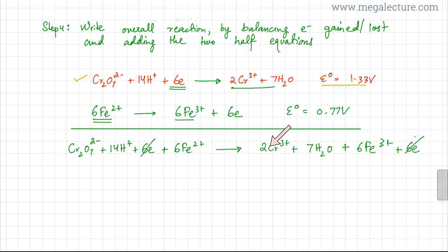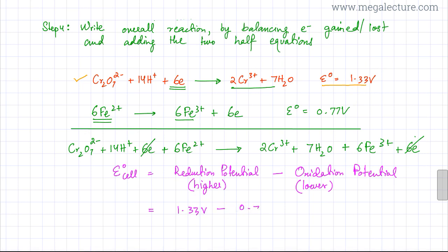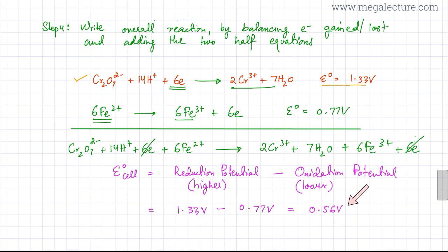Finally, I need to calculate the E0 cell for this reaction. E0 cell equals reduction potential minus oxidation potential, or higher potential minus lower potential. The higher potential is 1.33 volts (reduction) and the lower is 0.77 volts (oxidation). So E0 cell = 1.33 - 0.77 = 0.56 volts. Since 0.56 volts is greater than zero, the reaction is feasible and will proceed spontaneously.